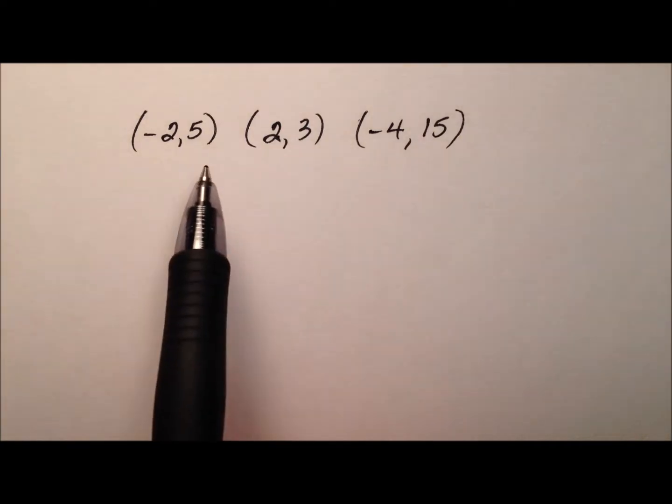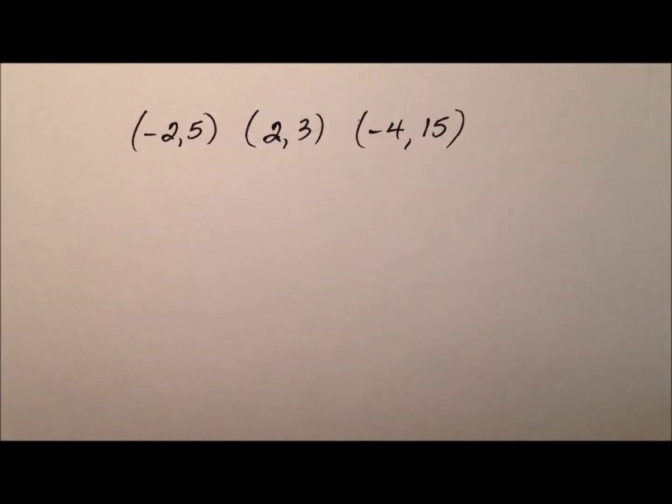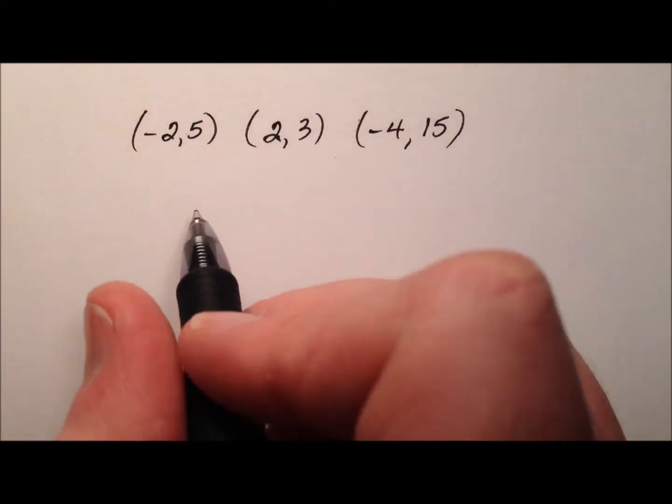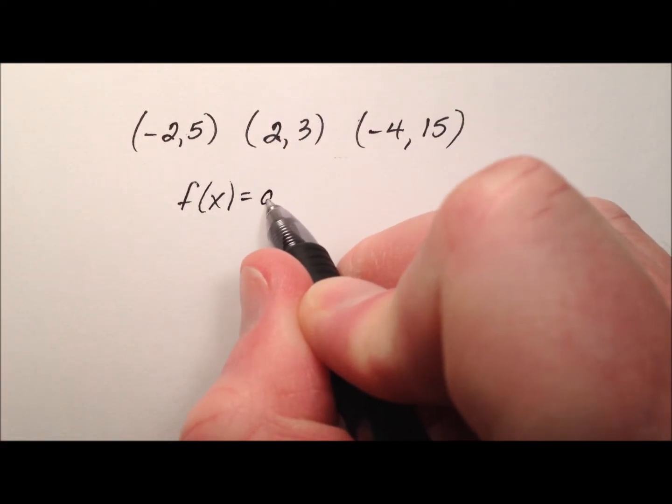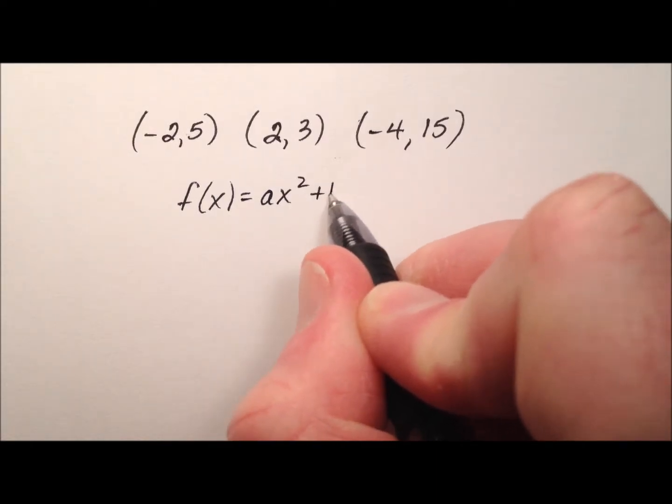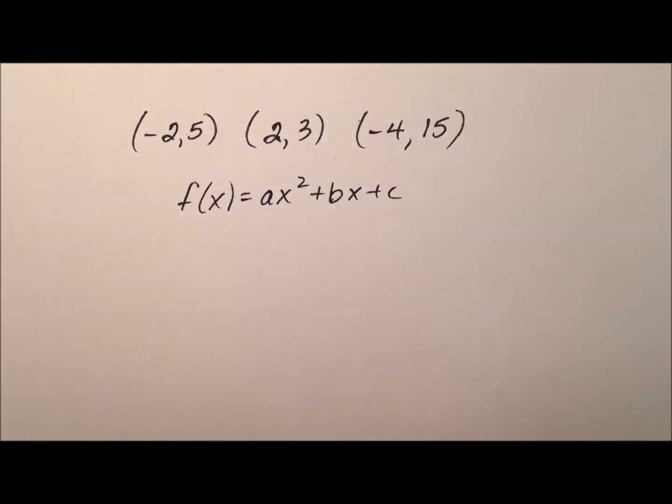In this example, we're going to take a look at these three ordered pairs, and we would like to write a quadratic function whose graph passes through these three ordered pairs. A quadratic function in standard form is ax squared plus bx plus c.